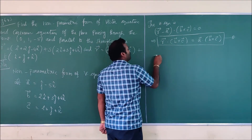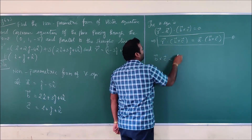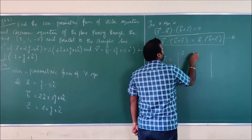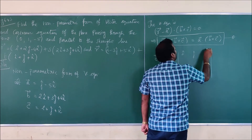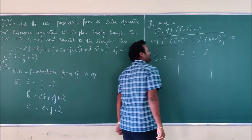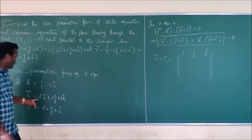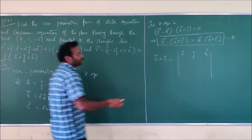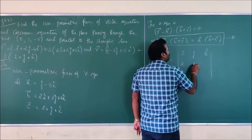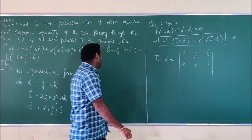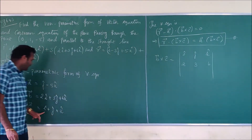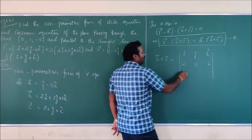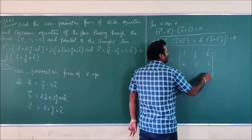Now I am going to find b-vector × c-vector. Setting up the determinant with i-cap, j-cap, k-cap in the first row; b-vector components 2, 3, 6 in the second row; and c-vector components 1, 1, 1 in the third row.